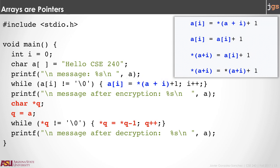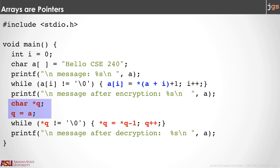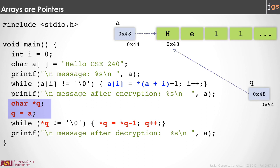Moreover, we can have a pointer pointing to an array. Here we create a new pointer Q, and when you assign Q equal A, that is going to put the address of the first element of the array A into Q, and the result is like in this picture. As you can notice, there is only one array — the green boxes that represent the elements exist only one time. However, we have two pointers A and Q both pointing to the first element. Therefore, you can access the array using A or Q, and you can use the asterisk or the square bracket notation. I recommend you to play with this code: print the values in the array, print the addresses, use %p to print the address of A and Q, and play with both notations.